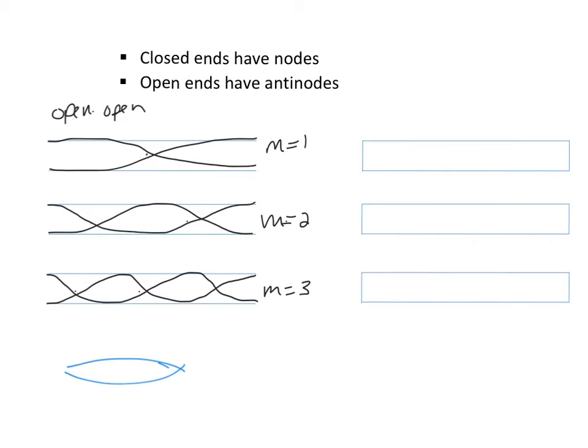Same goes for closed-closed. So for closed-closed tubes, the mode numbers are going to be the same. So this is one, two, one, two, and three. Your nodes are at the closed ends.